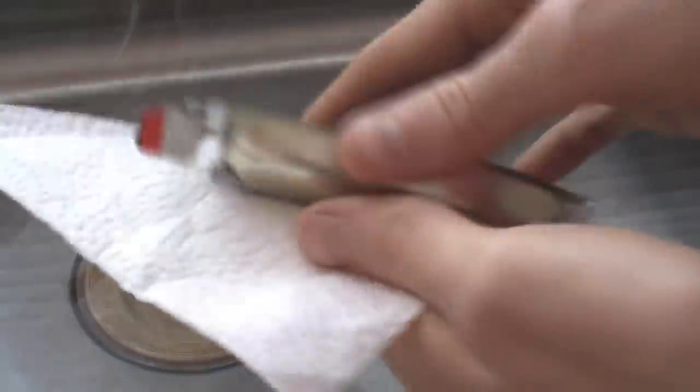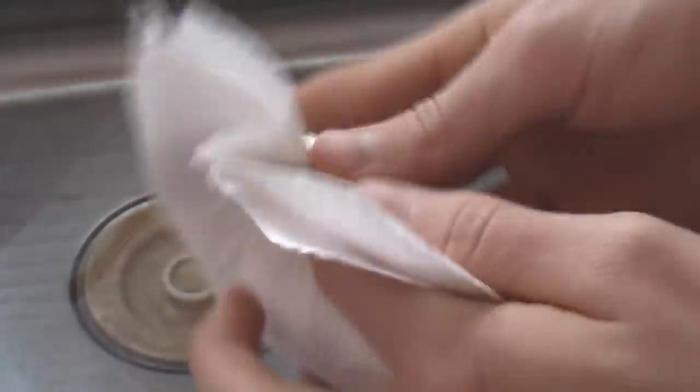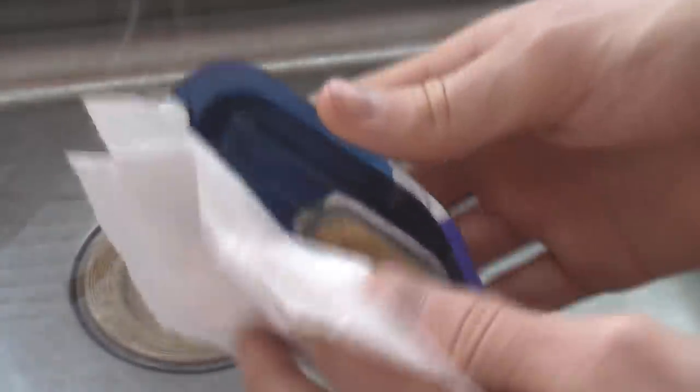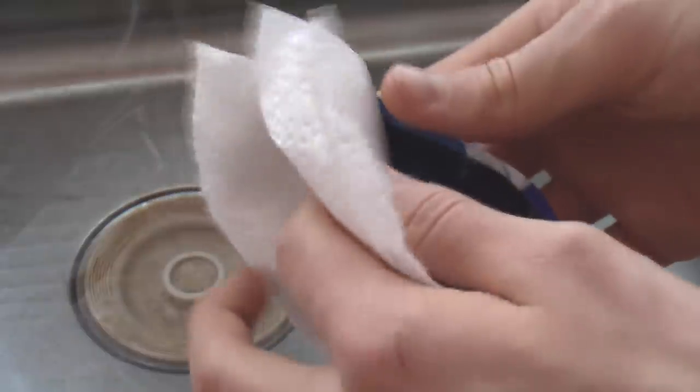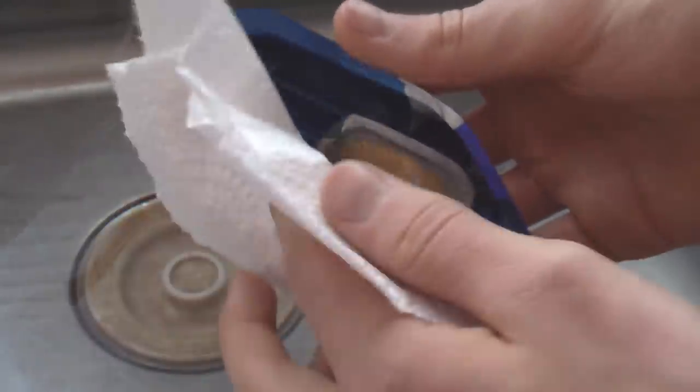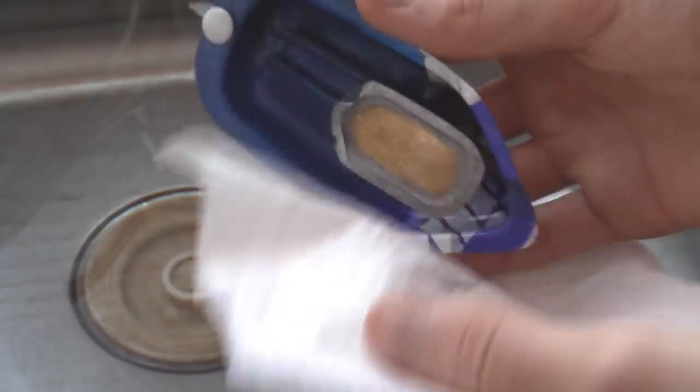And then just take a paper towel and wipe down the outside of it, the inside as best you can, just to get any of the water out of any little places where it could be. Just be careful with the boiler because you don't want to put much pressure on the boiler.